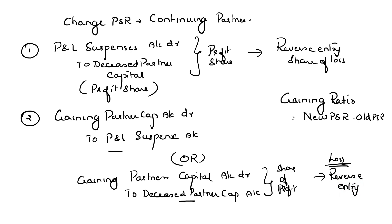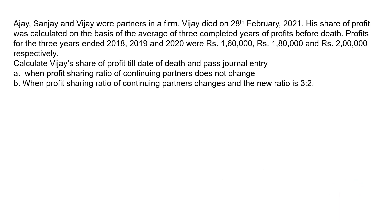To understand this concept and make it more clear, let us do it with an example with numbers. Let us take the example of Ajay, Vijay, and Sanjay — they were partners. Vijay died on 20th February 2021. His share of profit was calculated on the basis of the average of 3 completed years of profits before death. The profits for the 3 years ended 2018, 2019, and 2020 were ₹1,60,000, ₹1,80,000, and ₹2,00,000. Case 1: calculate Vijay's share of profit till the date of death and pass the journal entry when the profit sharing ratio of continuing partners does not change. Case 2: when the profit sharing ratio of continuing partners changes and the new ratio is 3:2.